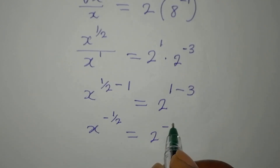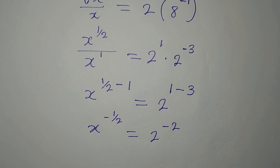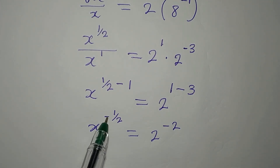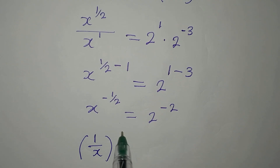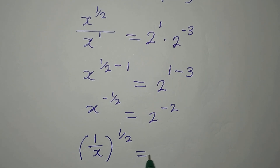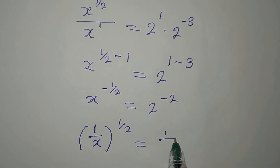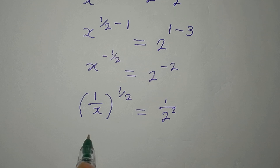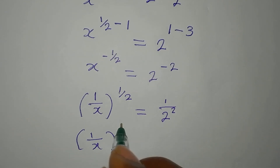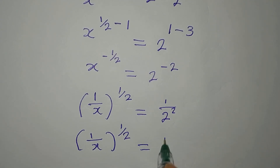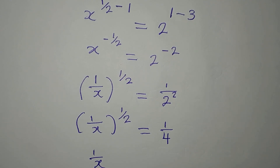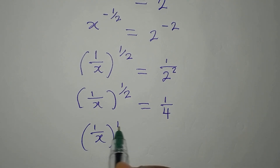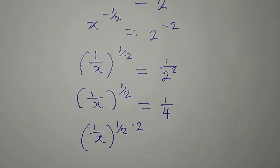So we have x to the power of negative 1 over 2 equals 2 to the power of negative 2. Removing the negatives gives 1 over x to the power of 1 over 2 equals 1 over 4. To remove the remaining power, we square both sides, multiplying the exponent by 2, giving 1 over x equals 1 over 4 squared.